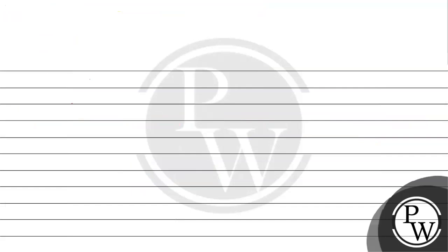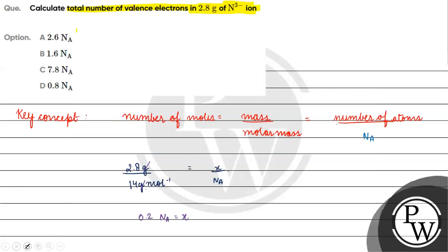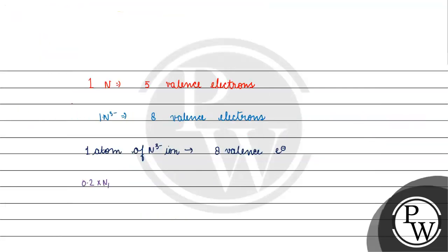If we take total valence electrons — for 1 nitrogen atom, there are 5 valence electrons. But we are dealing with the nitride ion, which has 8 valence electrons, because 3 electrons are added. So for 1 atom of the nitride ion, there are 8 valence electrons present. The total number of nitride ion atoms is 0.2 into Avogadro's number.